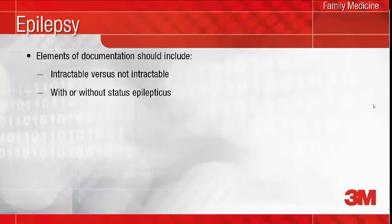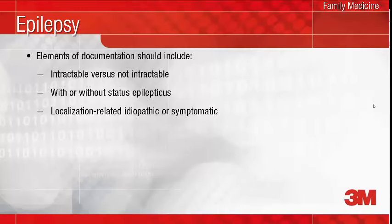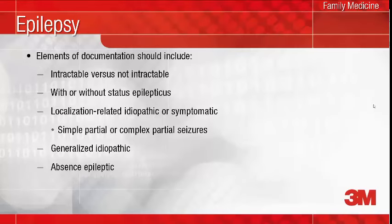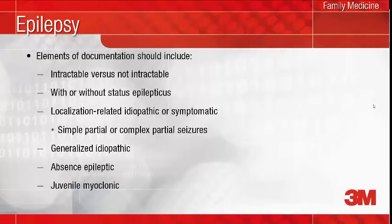All types of epilepsy are classified as intractable or not intractable and with or without status epilepticus. Then, specific codes are provided to distinguish between localization-related idiopathic or localization-related symptomatic epilepsy, and whether with simple partial or complex partial seizures, and generalized idiopathic, absence epileptic, and juvenile myoclonic epilepsy. Codes are also provided to report epilepsy undetermined as to whether focal or generalized, epileptic seizures of external causes such as alcohol, Lennox-Gastaut syndrome, and epileptic spasms. We hope that with all the detail provided in ICD-10, to see less of the code which describes unspecified epilepsy.